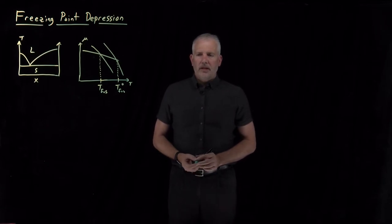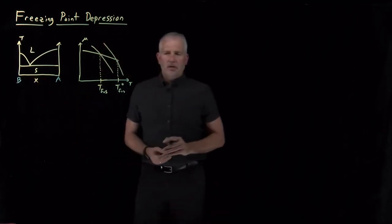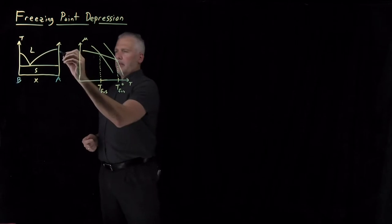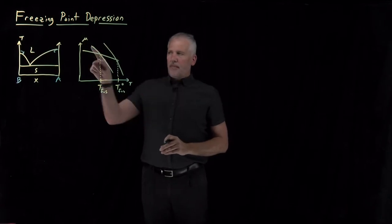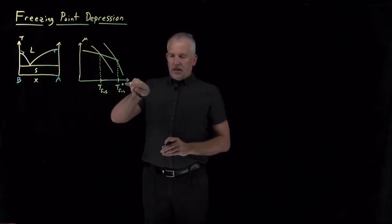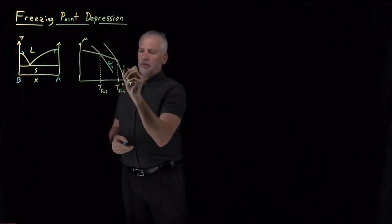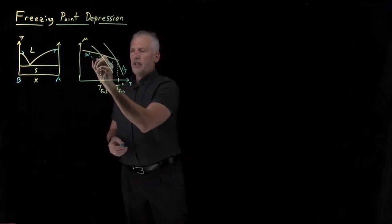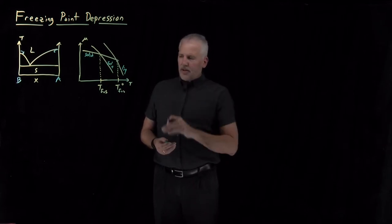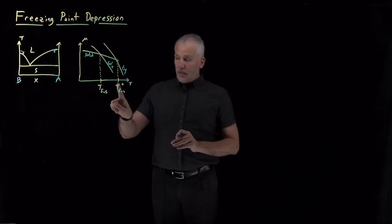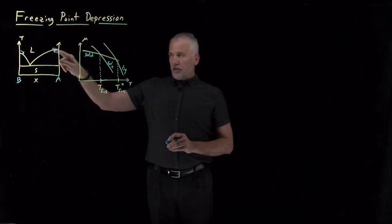We've begun to understand this idea of freezing point depression — why it is that for both pure A and pure B, when I dissolve a little bit of the other in the first one, it will decrease the freezing point in both directions. That has to do with the fact that the melting point is always lowered because the chemical potential is decreased in the solution relative to the pure liquid, so the intersection point with the curve for the solid has been shifted to lower temperatures.